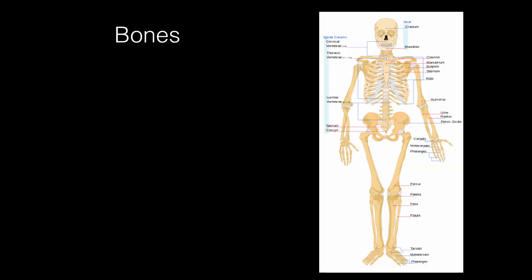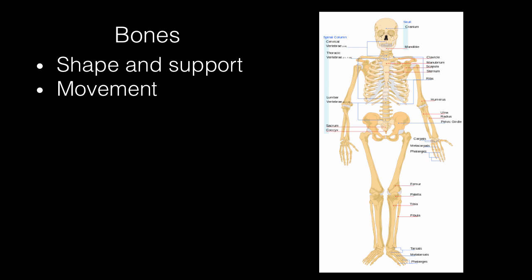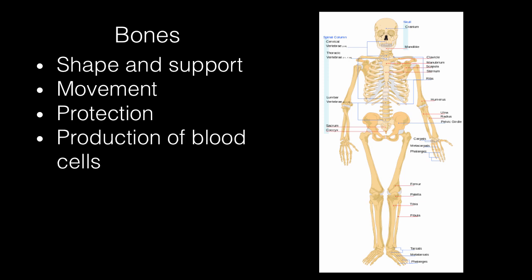The first part of the musculoskeletal system that most people are familiar with are bones or the skeleton. The skeleton does several things: it provides shape and support for your body, it provides a way that your body can move — muscles pull on bones and create the rigid structures that move. It provides protection; your skull protects your brain, and your ribcage protects your lungs and heart. It's also where blood cells are produced, and it provides a place to store minerals such as calcium.